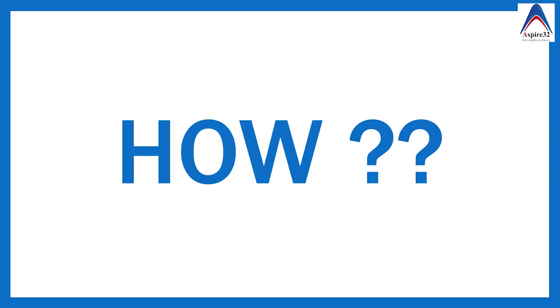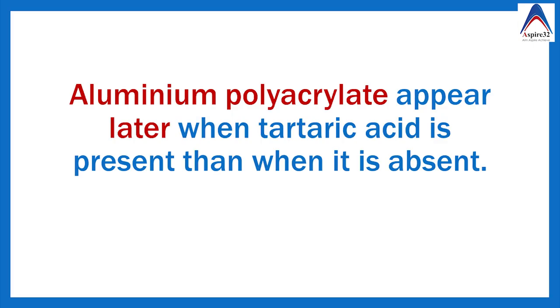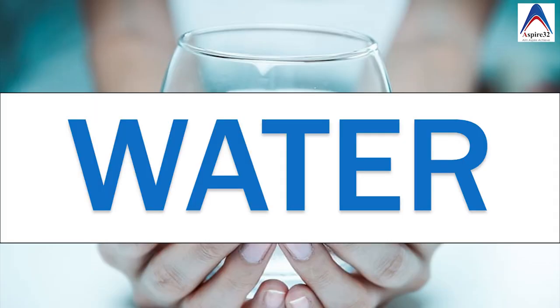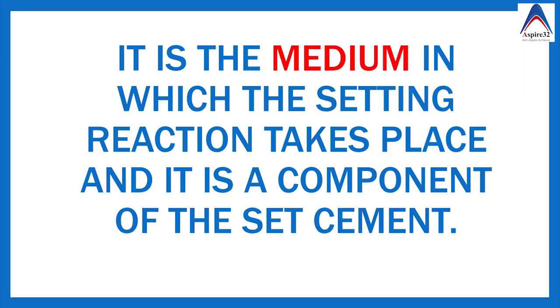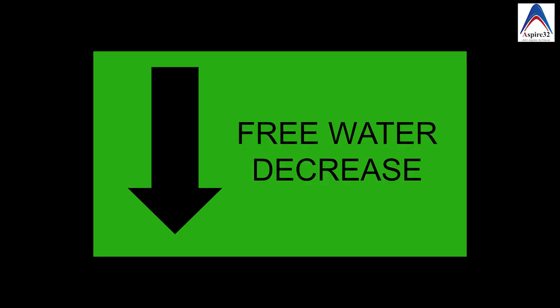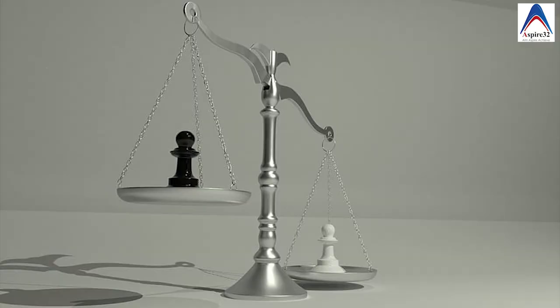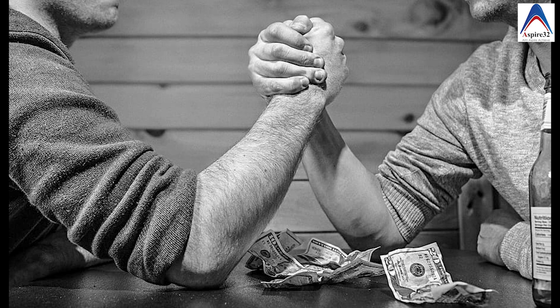Tartaric acid increases the working time by delaying the participation of aluminium ions in the setting reaction. The major component in the liquid is water, because it provides a medium for the reaction between the acid and the powder particles. There are two types of water present in glass ionomer cement: free water and bound water. As setting progresses, free water reduces and bound water increases. Abnormal increase or decrease in either type of water will have a long-lasting impact on the setting reaction and properties of the cement.